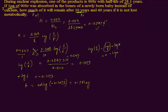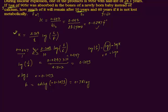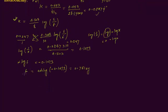The second part of the question asks: what amount remains after 60 years, if it is not lost metabolically? The time is now 60 years; k is the same (0.0247/year) and the initial amount is still 1 microgram. We apply the same first-order rate equation.